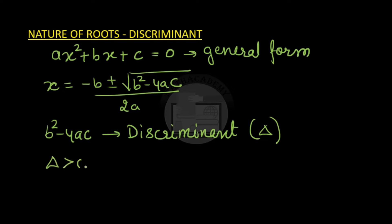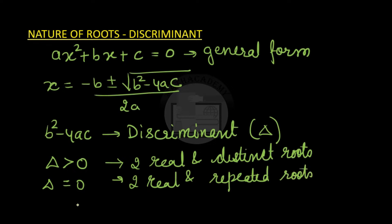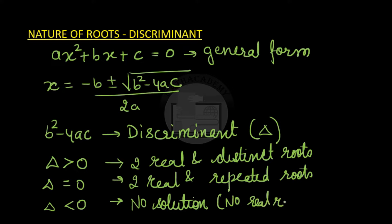When delta is greater than 0, the equation will have two real and distinct roots. When delta is equal to 0, you have two real and repeated roots. And when delta is less than 0, there is a negative inside the radical sign, so there will be no real roots. So delta must be greater than or equal to 0 to have real roots.